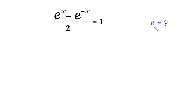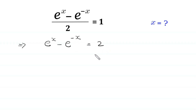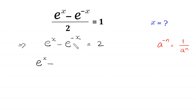Let us start. If we multiply both sides of this equation by 2, then this implies that e to the power x minus e to the power negative x is equal to 2. Next, by using the power rule a to the power negative n is equal to 1 over a to the power n, this e to the power negative x can be written as 1 over e to the power x, giving us e to the power x minus 1 over e to the power x is equal to 2.